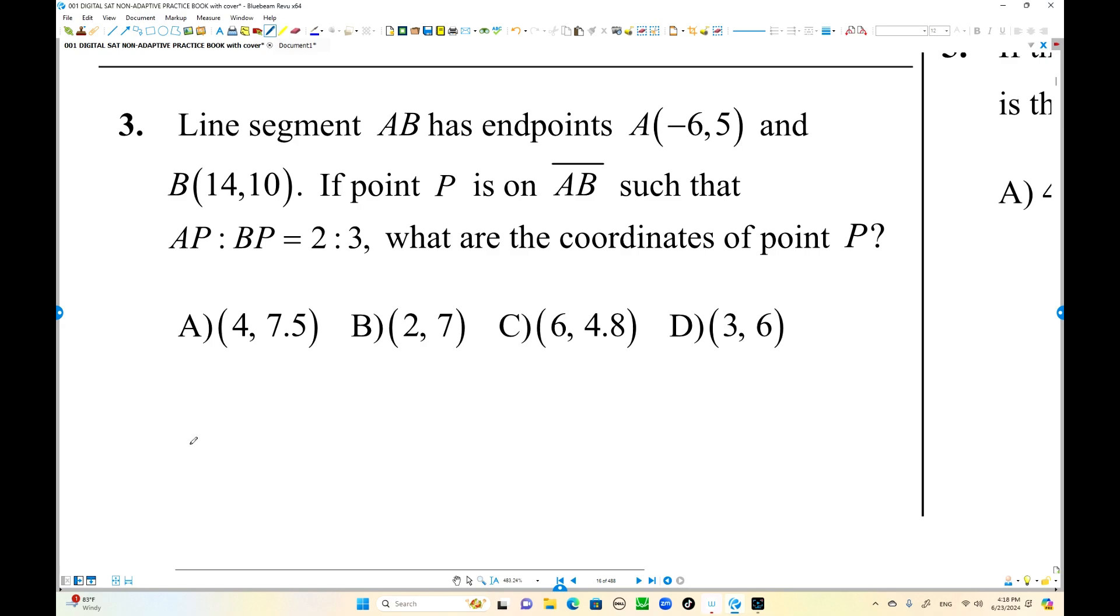Line segment AB has endpoints A at negative 6 and 5, B is at 14 and 10. Divide this one 2 to 3. This is the short side, 2 to 3. This is point P with coordinate x and y.